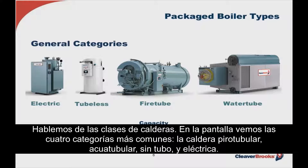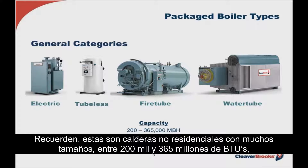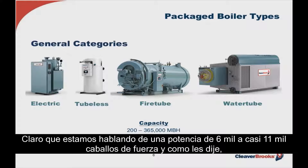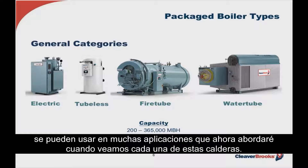Let's talk about the general types of boilers we will be considering today. Those shown represent the general categories into which all boilers fall: the fire tube boiler, the water tube, the tubeless boiler, and the electric boiler. These non-residential boilers span a wide range of sizes from about 200,000 to 365 million BTU — a horsepower input range from about 6 border horsepower to almost 11,000 horsepower — and can be applied to a vast array of applications.